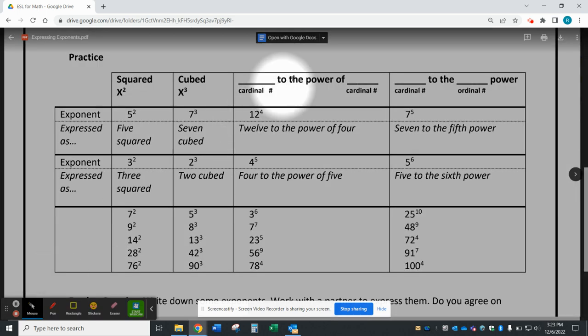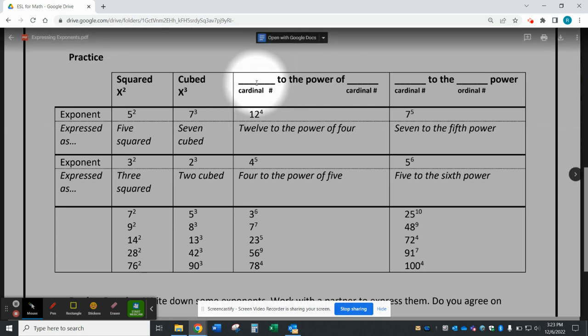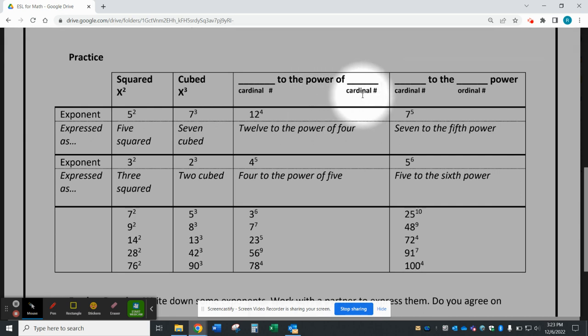To express other exponents, we really have two different phrases that we use in English. In the first one, you can use a cardinal number, and then the phrase to the power of, and another cardinal number. So in this case, we would say 12 to the power of 4, or 4 to the power of 5.